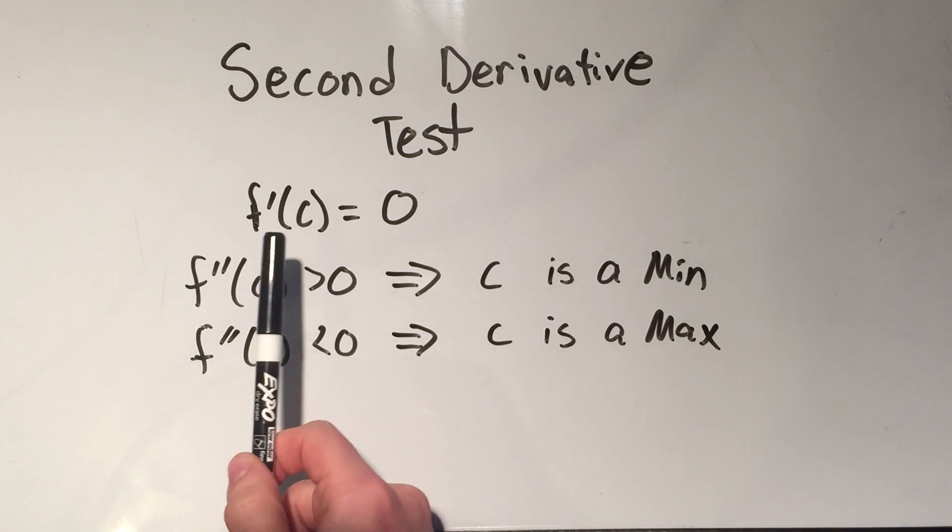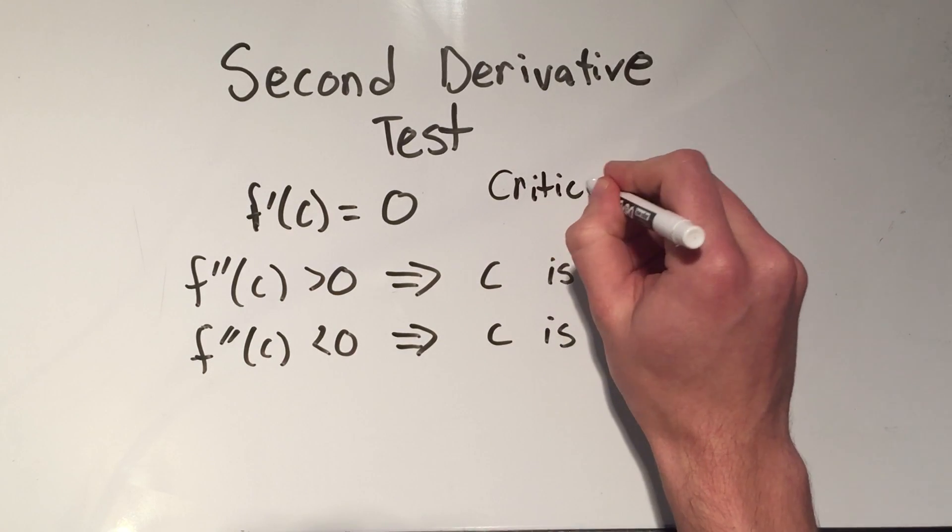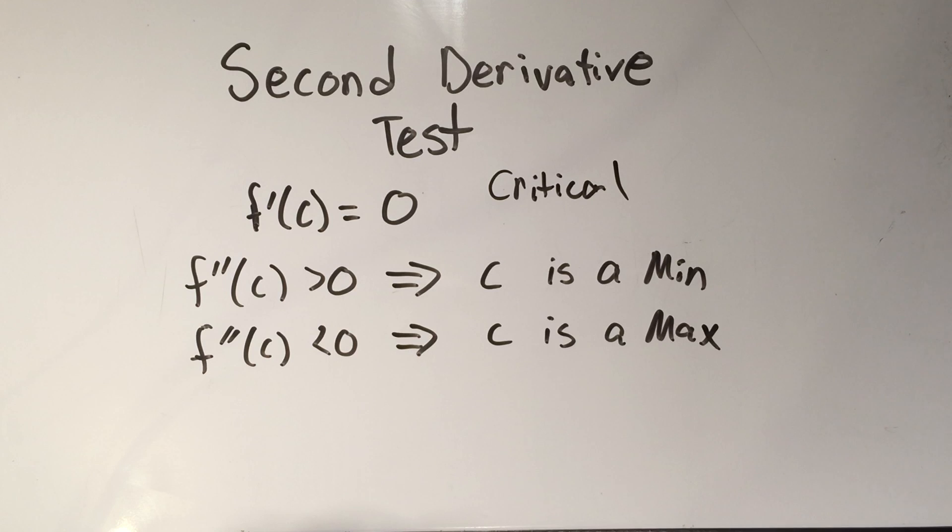So let's see what this says. It says if f'(c) equals zero, remember that means c was a critical point if your first derivative equals zero. And then what you do is you take the second derivative and you plug the critical point in. And if that value is positive, then that means c will give you a minimum value. If your second derivative evaluated at c is less than zero, if your second derivative evaluated at c is negative, then that means c will give you a maximum.